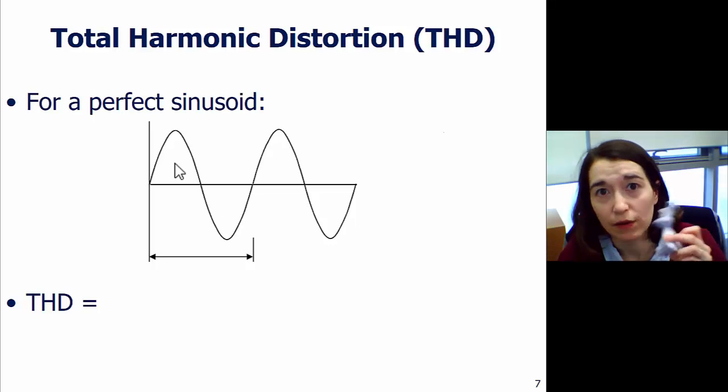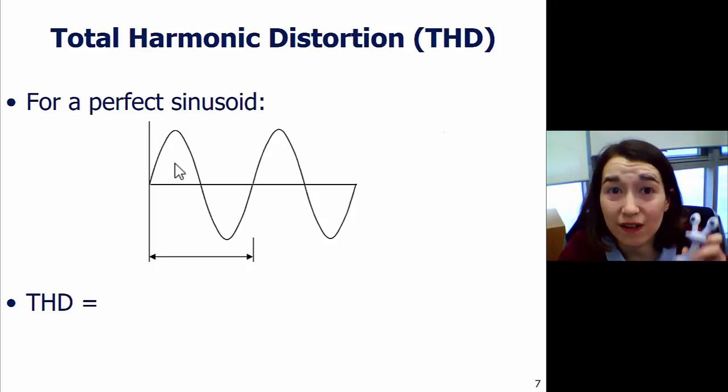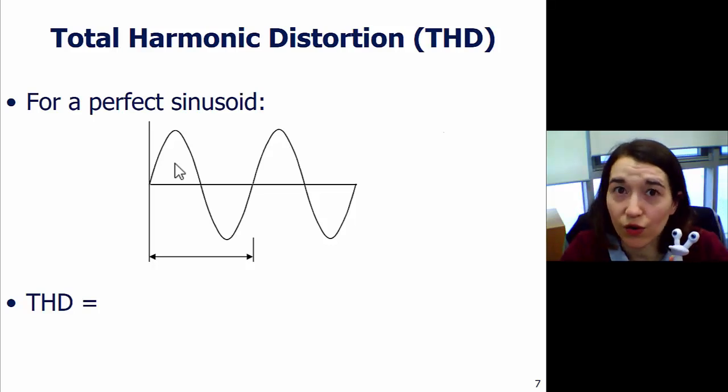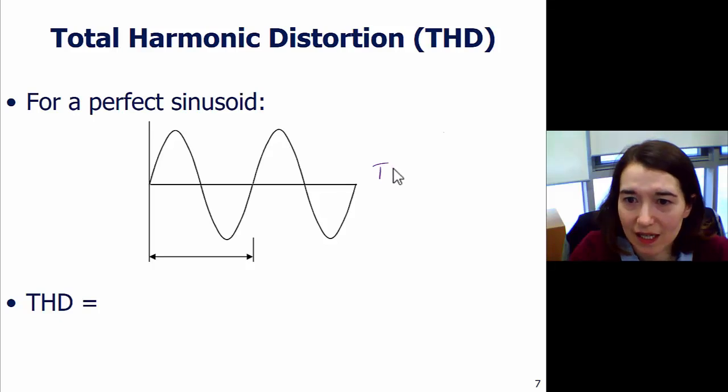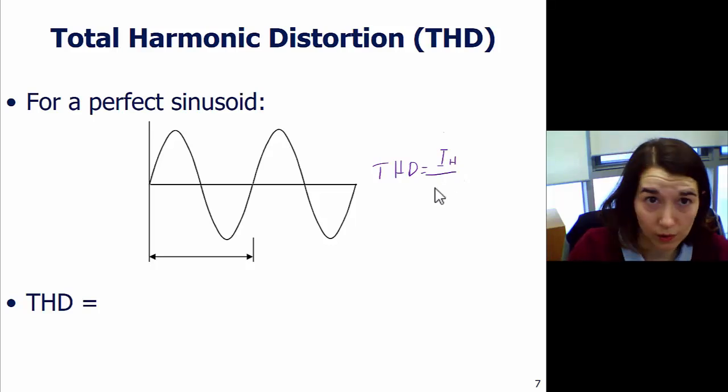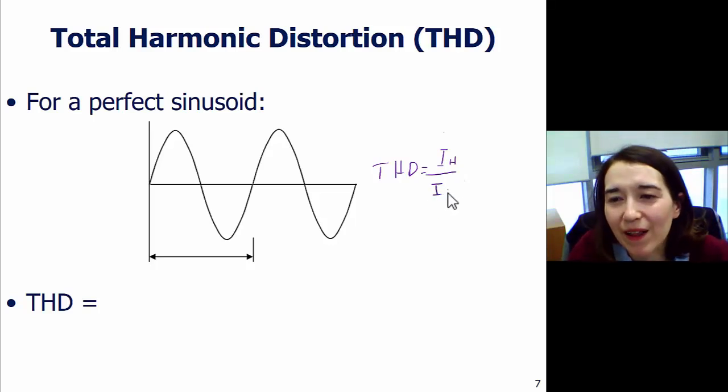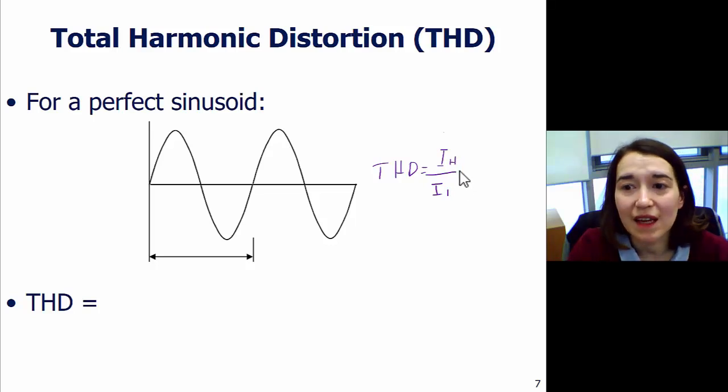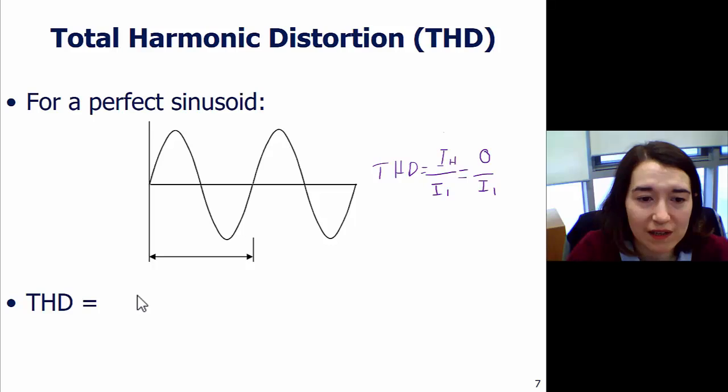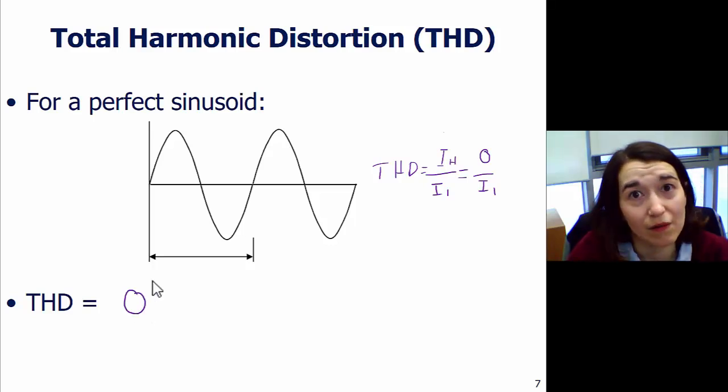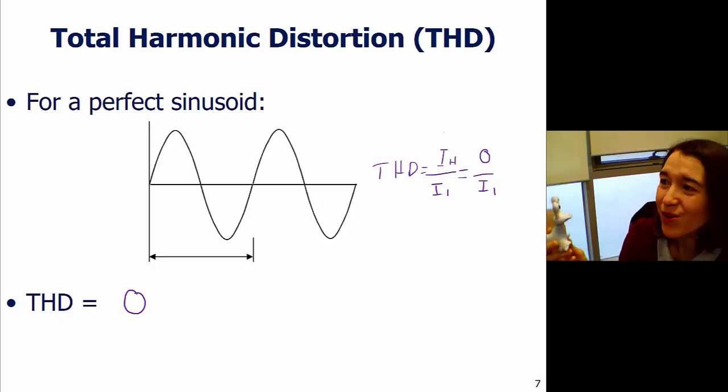Lastly, we have a perfect sinusoid. We can figure out the total harmonic distortion, because again we look at THD. We're looking at the value of the harmonics, including DC value, divided by the fundamental. In this case, if this value is zero, then the whole value is zero. So if it's a perfect sinusoid and there's no harmonics, our THD is simply zero. Valerie, why don't you sing a perfect zero THD sound?